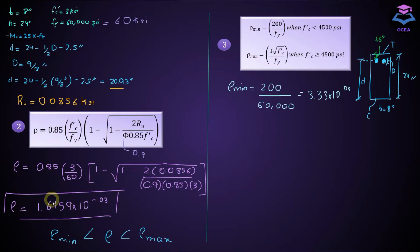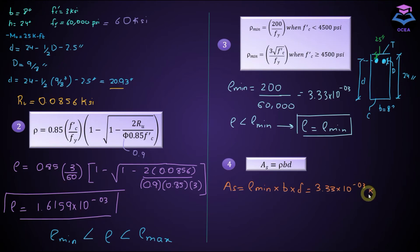And we can see here that rho calculated is less than rho minimum. So the actual percentage of steel to be used in the section would be equal to rho minimum to avoid abrupt or sudden failure. And there is no need to calculate the maximum percentage of steel here because rho calculated is less than rho minimum. After calculating rho minimum, now we will evaluate the value of area of steel to be used in the section against this steel percentage. So As is equal to rho minimum into B into D. And rho minimum is equal to 3.33 raised to the power minus 3, B is equal to 8, D is equal to 20.93, and As from here is equal to 0.558 inch square.